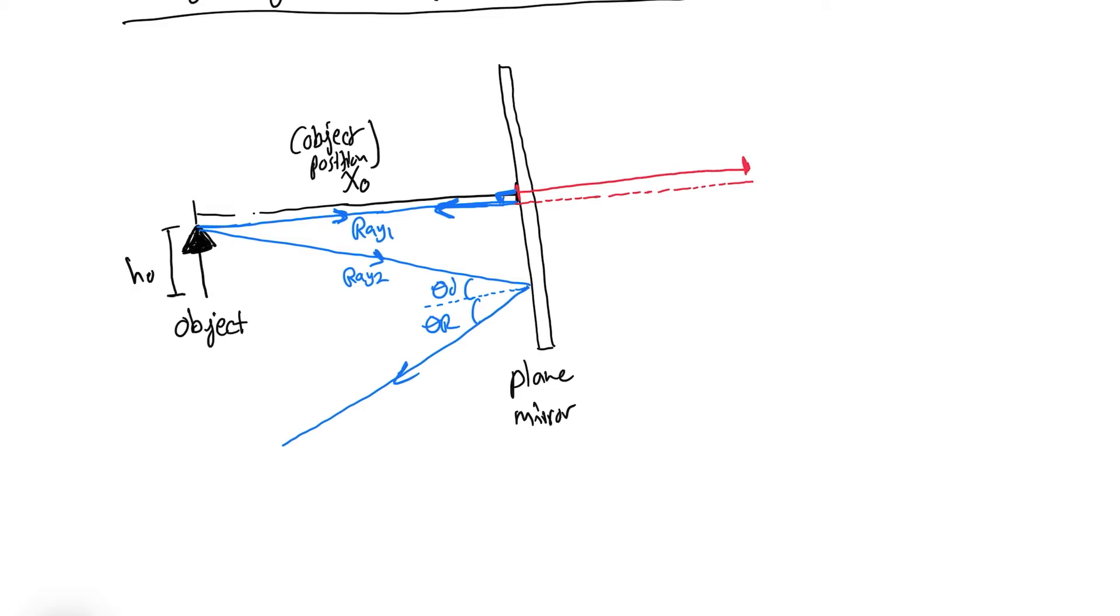Away from the mirror, we'll give it the letter xi which is the image position. So on the virtual side, the image is located at xi. When I say virtual, it's because this image is seen by your brain and it cannot be mapped on a surface. Our brain tends to see light in a straight line and we cannot map it on a surface in the case of a plane mirror. So an object placed at xo will be reflected as if it's an image placed at xi behind the mirror.